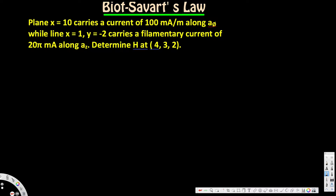We have two currents. The plane x=10 carries 100 mA/m along a_z — this gives us H_ρ. The line x=1, y=-2 carries a filamentary current of 25 mA along a_z — this gives us H_L, the magnetic field intensity due to the infinite long wire. The total H is the addition: H = H_L + H_ρ.